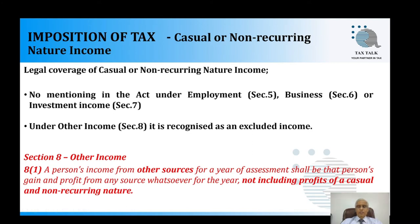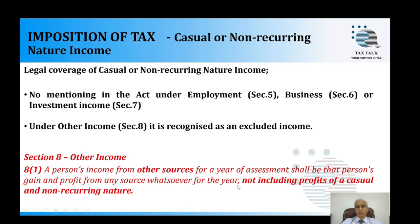Now we turn to casual and non-recurring nature income. These are not taxed under employment income (section 5), business income (section 6), or investment income (section 7). We refer to section 8, which reads: 'a person's income from other sources for a year of assessment shall be that person's gains and profits from any source whatsoever for the year, not including profits of a casual and non-recurring nature.' Under section 8, casual and non-recurring nature income is recognized but totally excluded from the Inland Revenue Act.